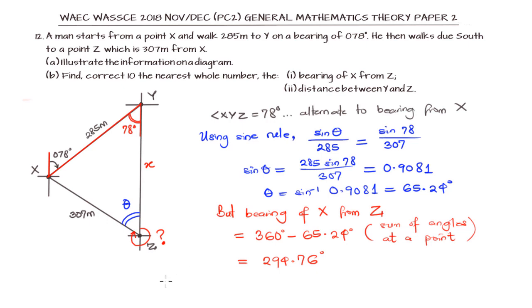Normally, bearings are given in three digits. We don't include decimal places in bearing. We need to know that for further questions, bearing is always in three digits. So this bearing, the bearing of X from Z, approximately will be 295 degrees. And that is our solution.